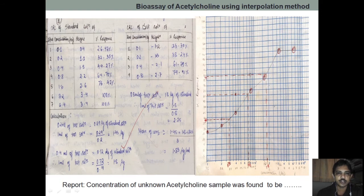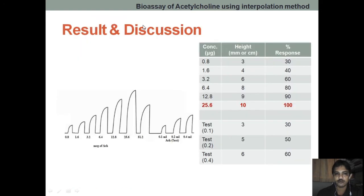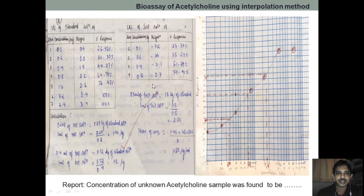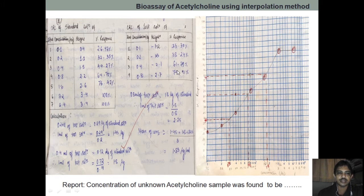This is the test solution response. The test solution response for 0.1, 0.2, 0.4, and 0.8 ml — this is the response. If 3.4 is 100%, how much will 2.7 be? Like that, again, we are going to do the calculation. We have taken three concentrations because the first concentration did not show a prominent enough effect.